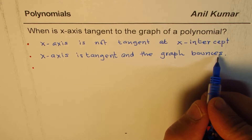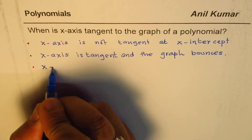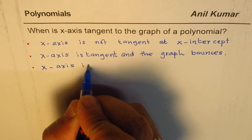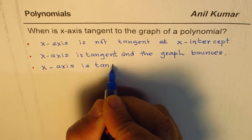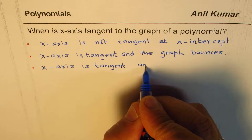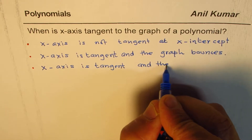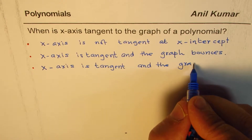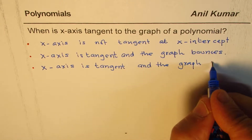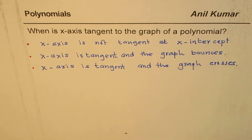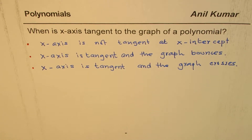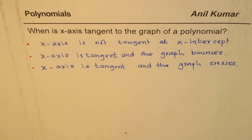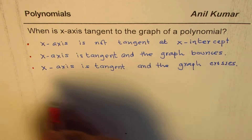The third condition is that x-axis is tangent and the graph of the polynomial crosses the x-axis. So these are the three conditions, and students want to know how we can determine how a graph of a polynomial will behave at an x-intercept.